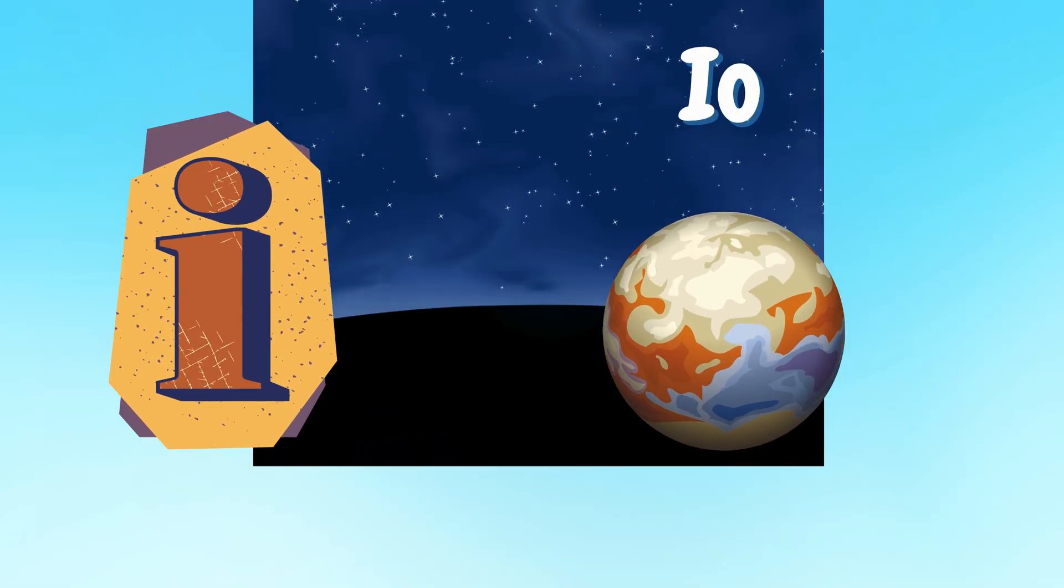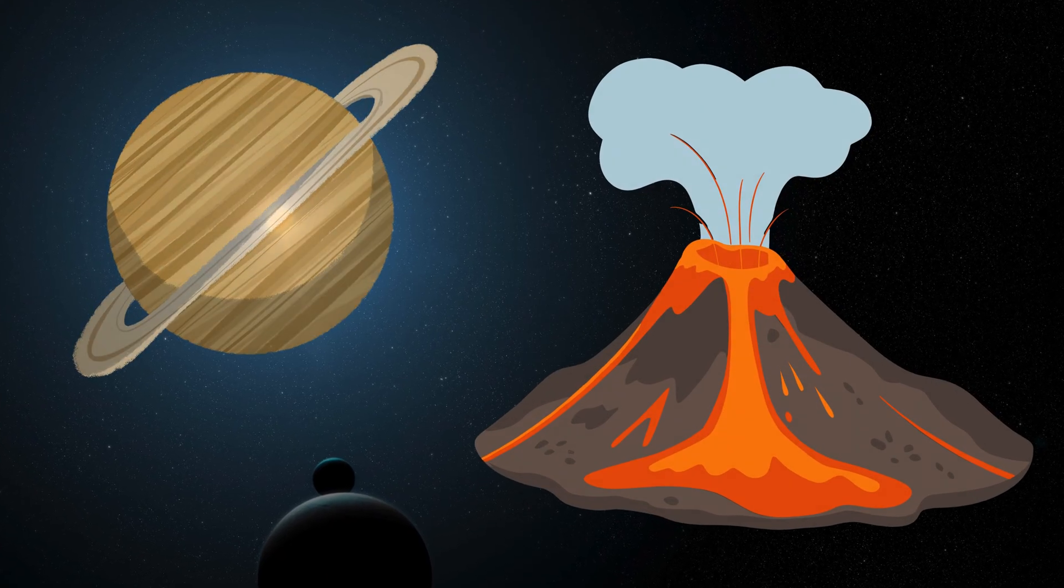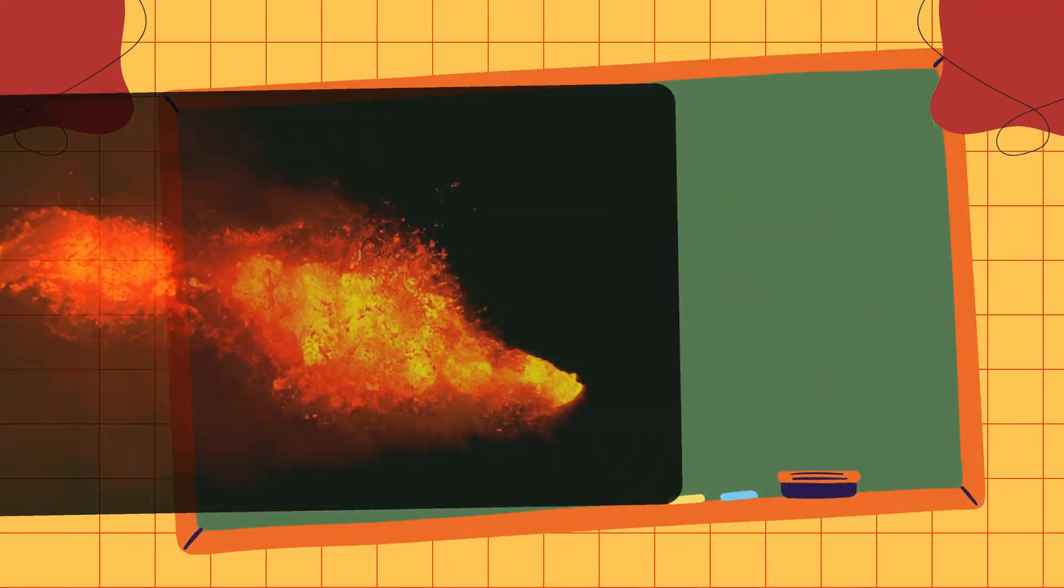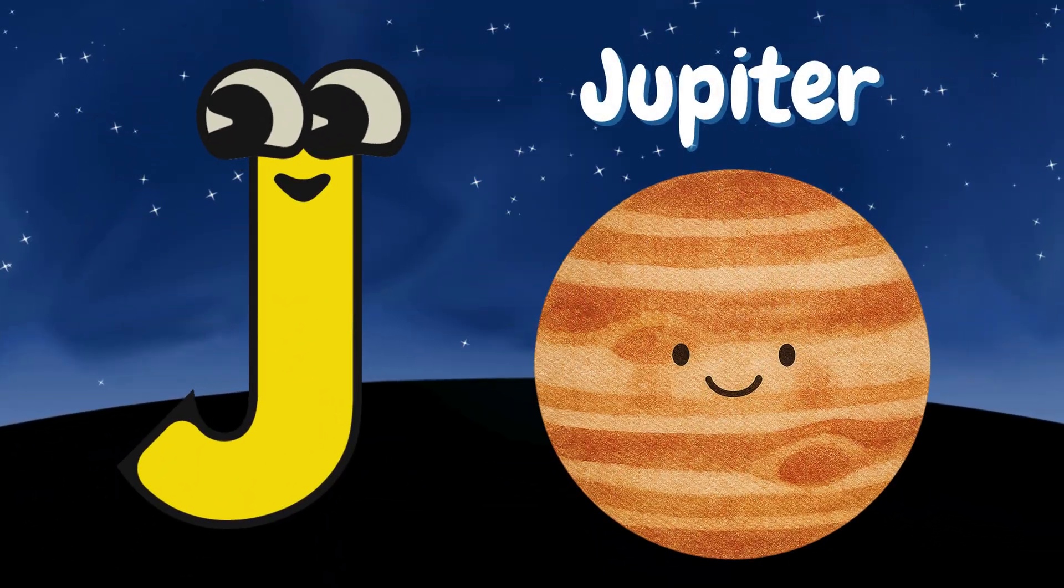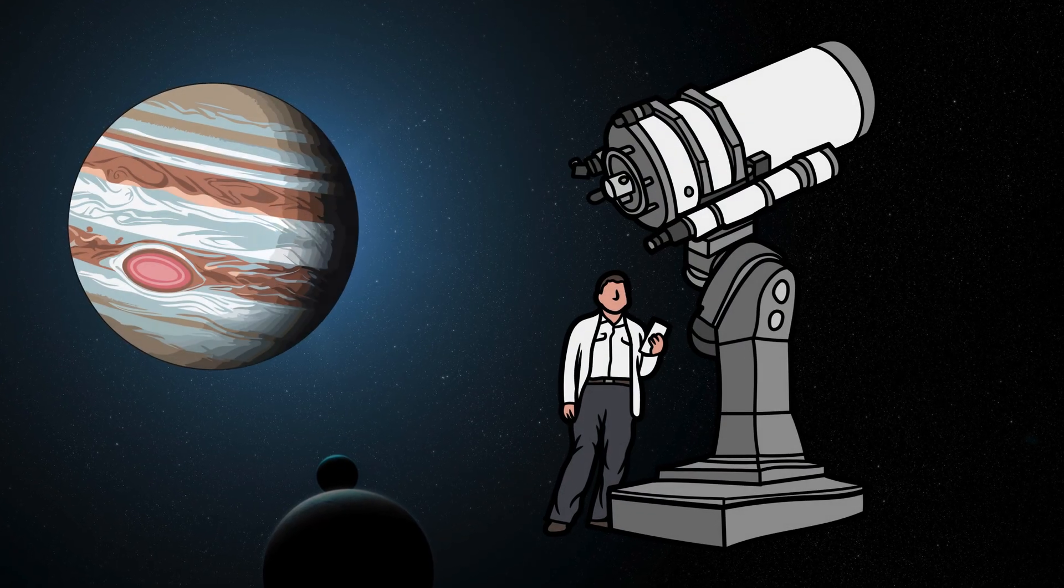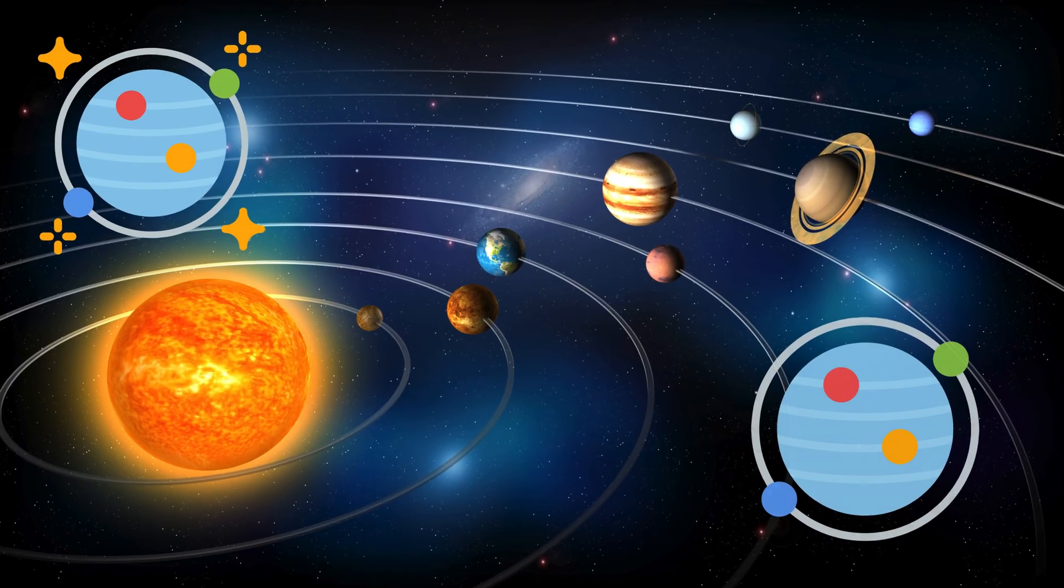I is for Io. Io is Jupiter's moon that spits out fiery lava. J is for Jupiter. Jupiter's the biggest planet with a stormy red spot.